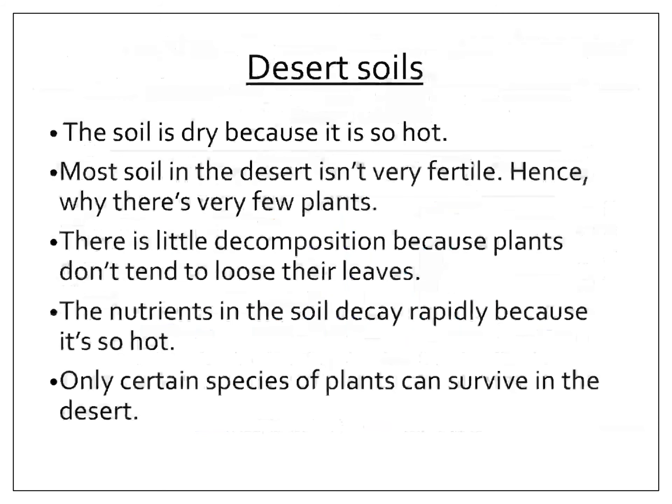Our second aim of this lesson was to describe the characteristics of the soils in the desert. The soil is dry because it's so hot. Most soil in the desert isn't very fertile, hence why there are very few plants. There is little decomposition because plants don't tend to lose their leaves. The nutrients in the soil decay rapidly because it's so hot. Only certain species of plants can survive in the desert — an example would be a cactus.